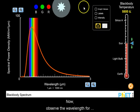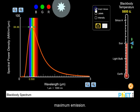Now observe the wavelength for maximum emission. For the sun, it is 0.5 micrometers.